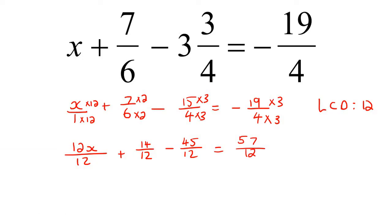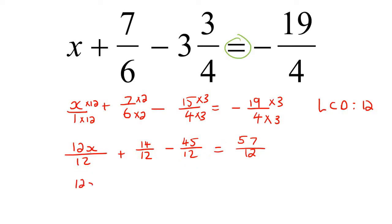Now listen carefully. When you are busy with an equation — something that has an equal sign — and all the numbers at the bottom are the same, you can ignore them. That is only when we are busy with equations. So now we can write everything as: 12x plus 14 minus 45 equals 57.